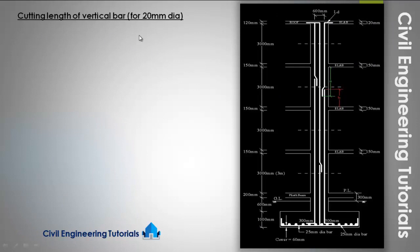Now, cutting length of vertical bar for 20mm diameter. We cannot provide lap in every bar at the same level — laps must be provided alternatively. If one lap is on the upper side, the other should be on the lower side. Clear cover should be provided at the end of every lap, and clear cover should be divided equally above and below the center line.